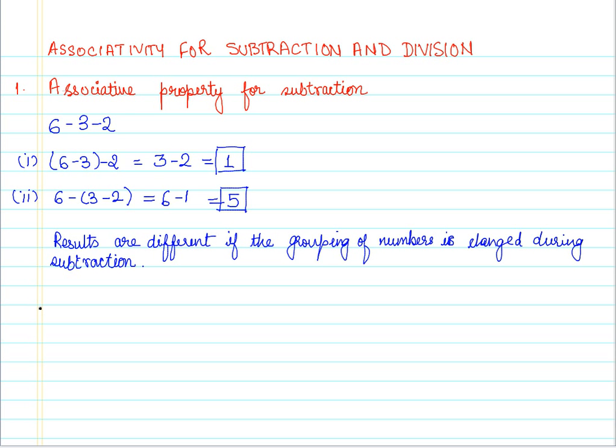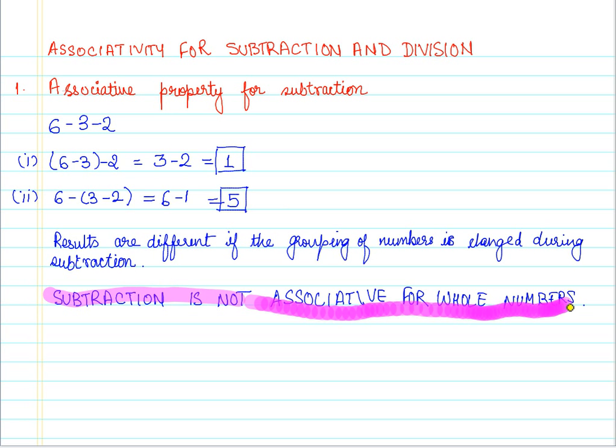Now based on this, we can conclude that subtraction is not associative for whole numbers. Now why should we keep this property in mind?